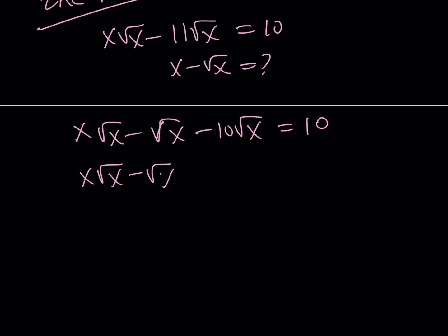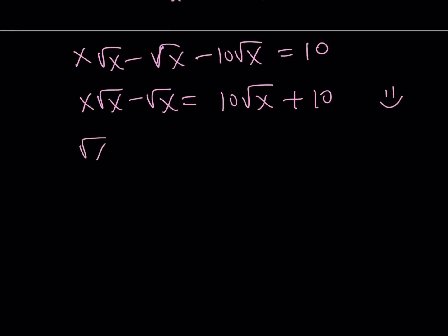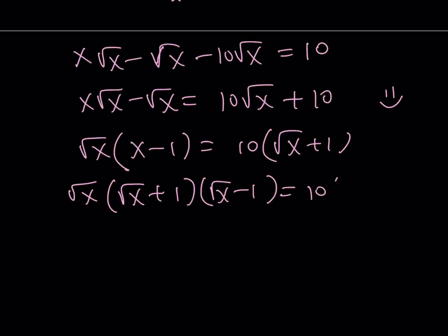I can put these guys on the same side now with the 10. So let's go ahead and put the 10s together. Now factor out square root of x. And that's going to give you x minus 1. Factor out 10. That's going to give you square root of x plus 1. Now x minus 1 can be factored into root x plus 1 and root x minus 1 using difference of two squares.